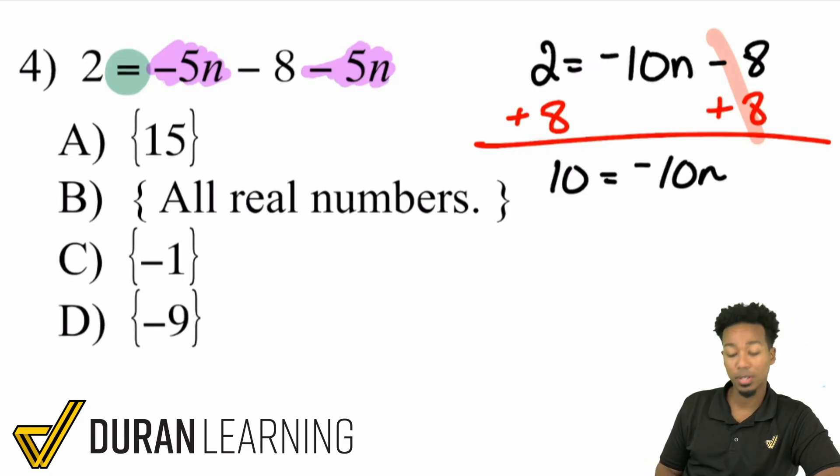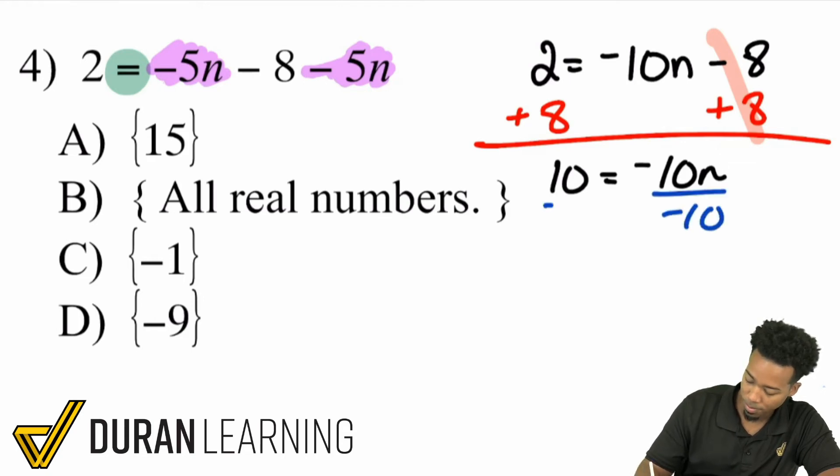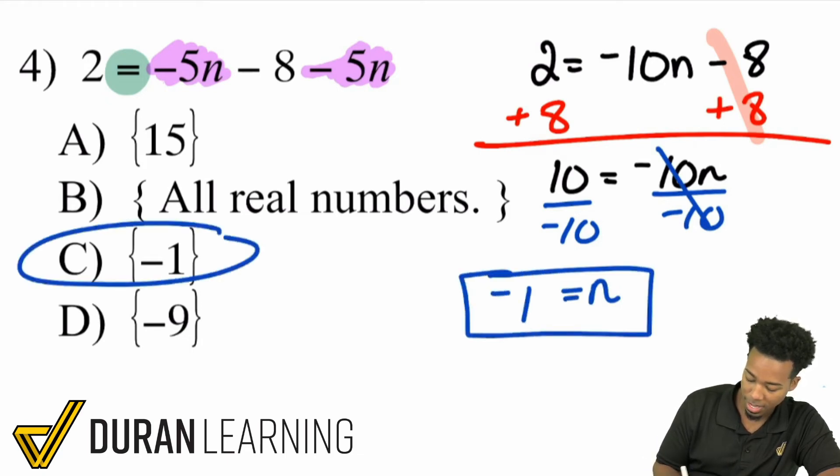And then the last step I'll take here is divide both sides by negative 10 and call it a day. So boom, right there, n equals negative 1. And that is choice C.